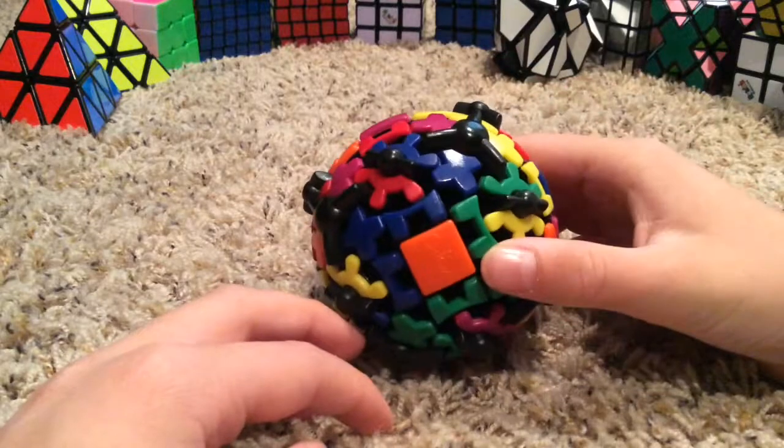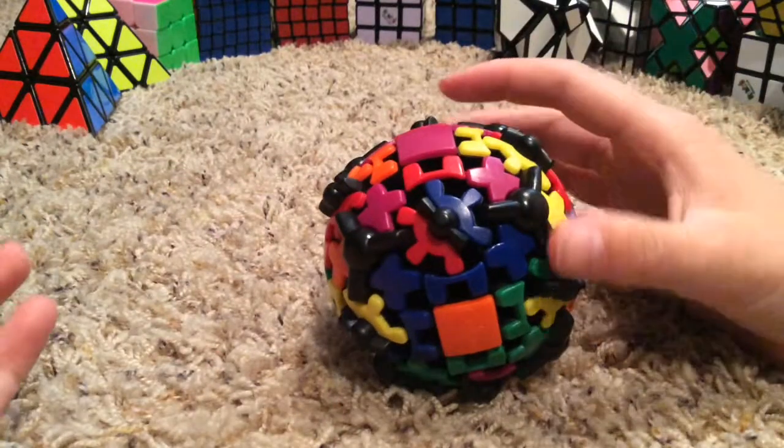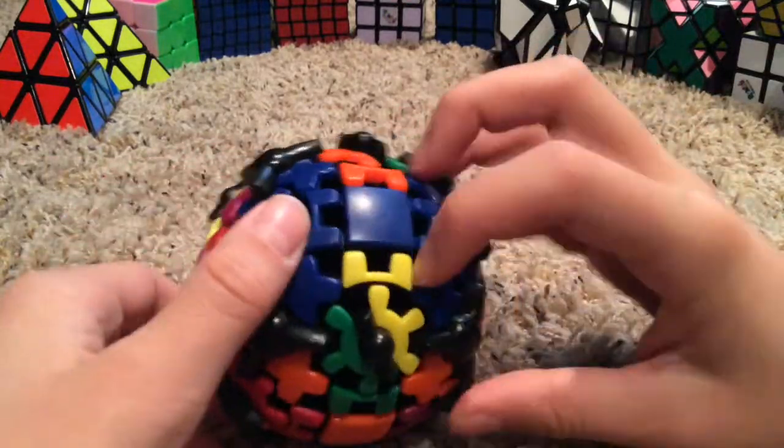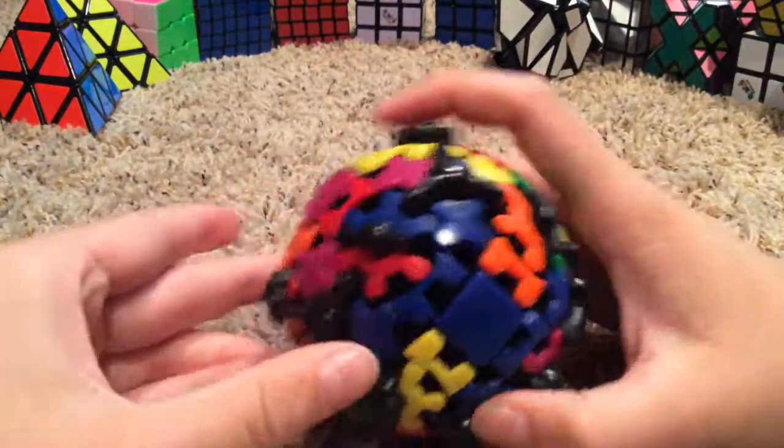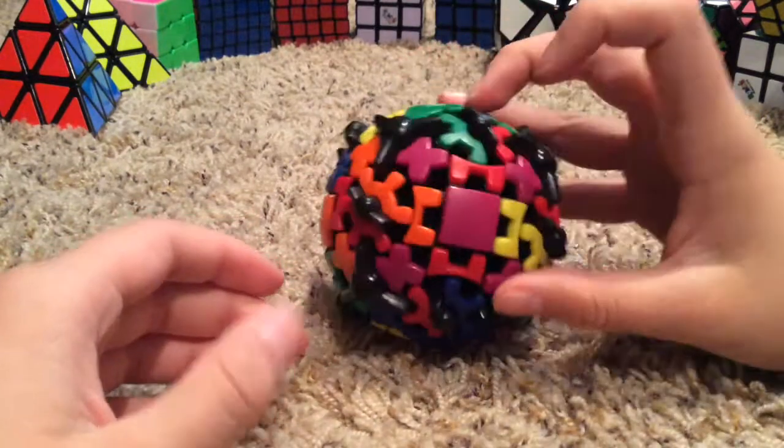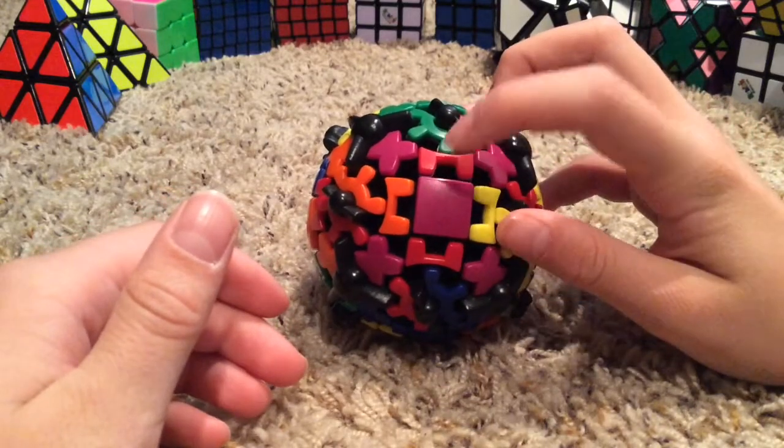Now we flip the cube over and then all of these are in the correct spot now because we did the first layer. So we match up with these blue and then we get it to the centers. And step one is complete. We have corners correct with the centers.